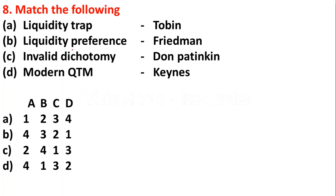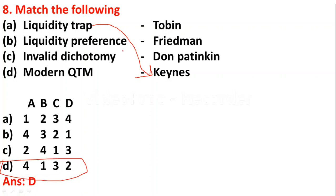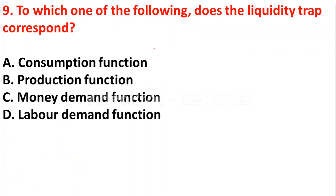Match the following: liquidity trap — JM Keynes; liquidity preference — Tobin; invalid dichotomy — Don Patinkin; modern QTM — Friedman. As we know, liquidity trap is given by JM Keynes, so option D is the right answer. Modern Quantity Theory of Money was given by Friedman.